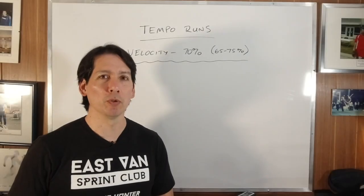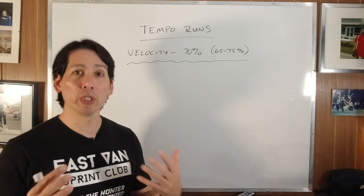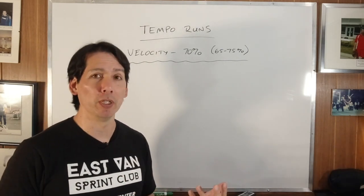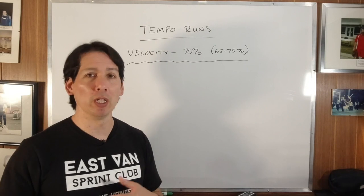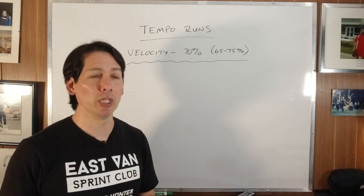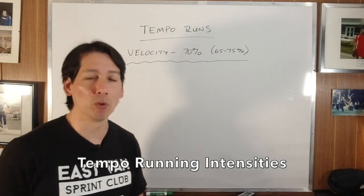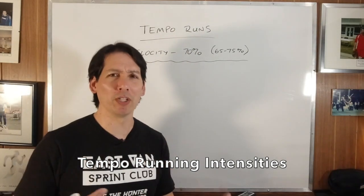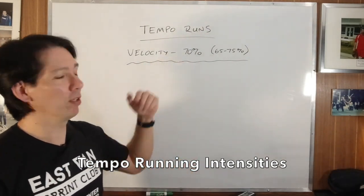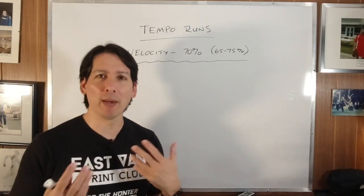Hello, this is Derek Hansen for Running Mechanics Professional. We're going to talk about a question I'm asked a lot, very frequently, whether it's online, social media, or even at my courses — they want to know what velocity do I run my tempo runs. How do I figure that out? Is there a scientific equation? You say 70%. What does that mean? What is that based on?